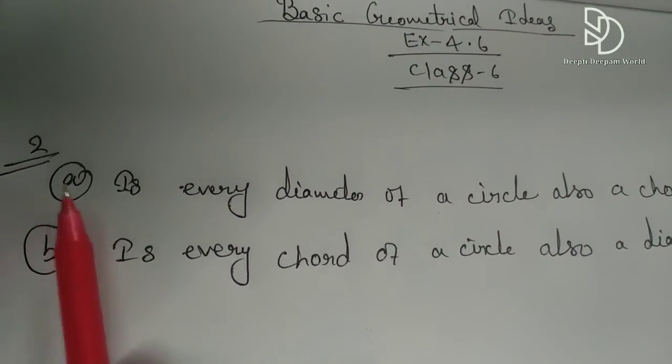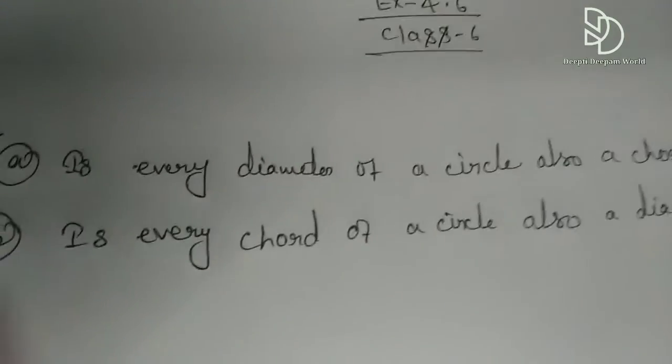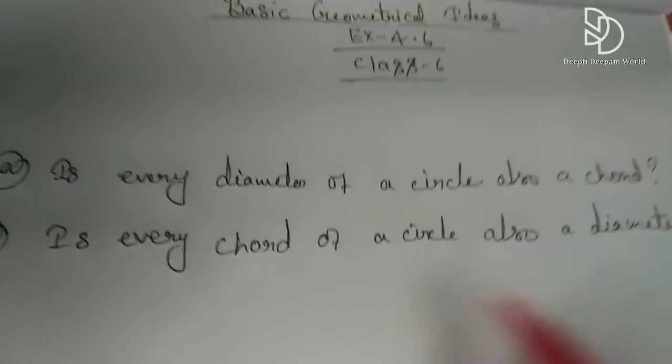Second number, what is the second number? Question 2a: Is every diameter of a circle also a chord? Question 2b: Is every chord of a circle also a diameter?